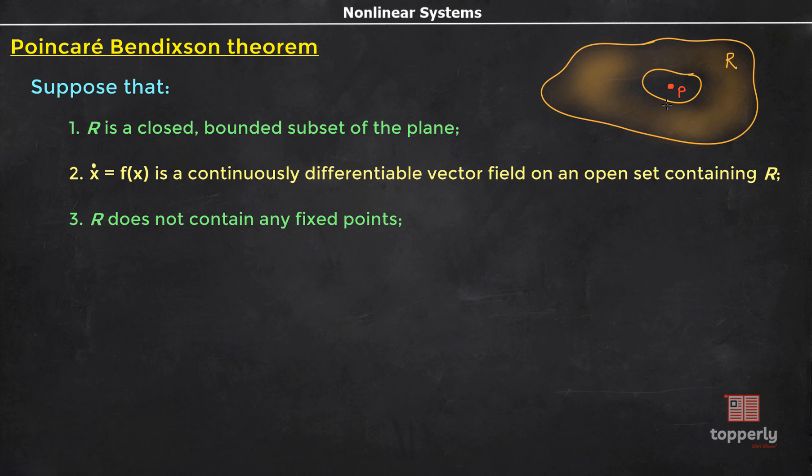See this fourth point. For trajectory C to always stay in R, the vector field at the boundaries of R should always point towards R. That is, like this. Similarly, at this boundary also, it should point towards R.